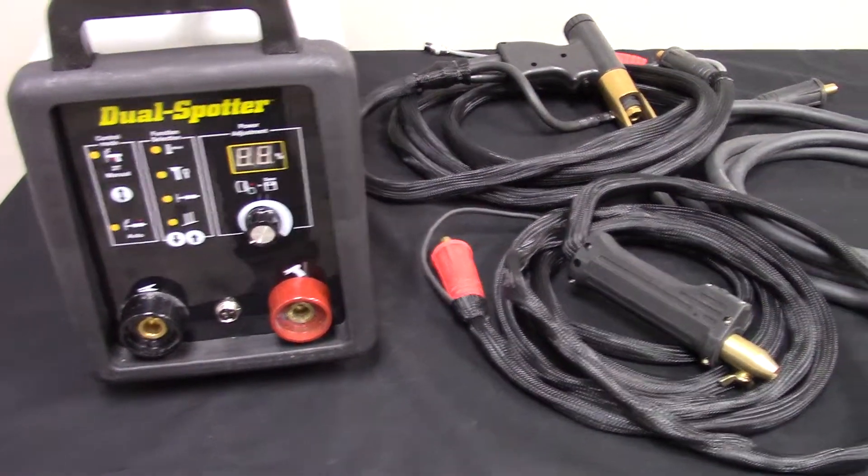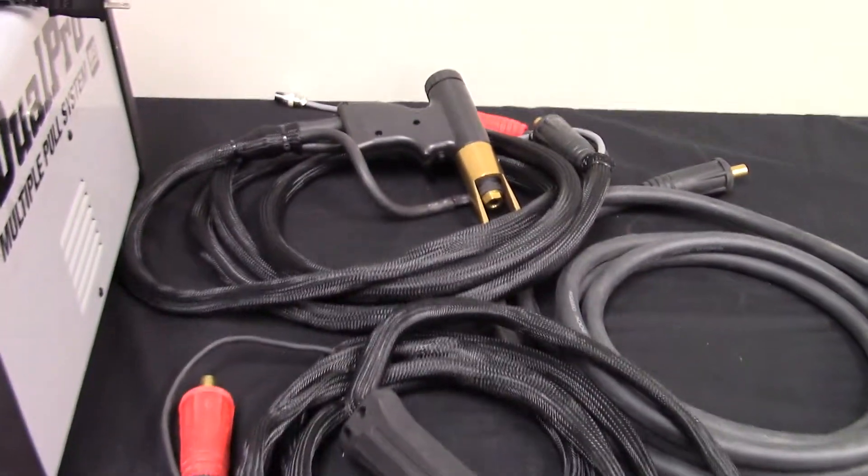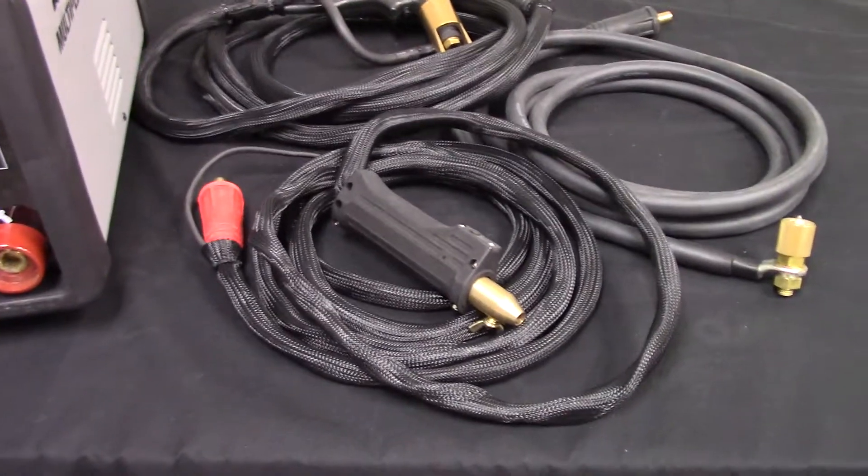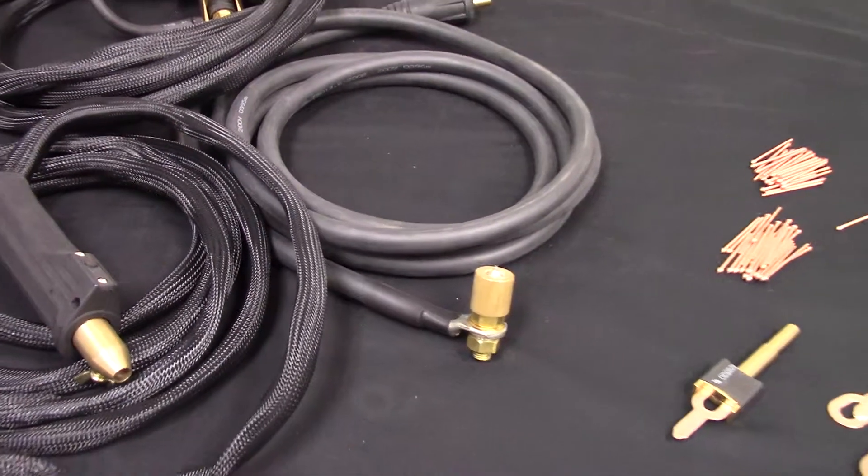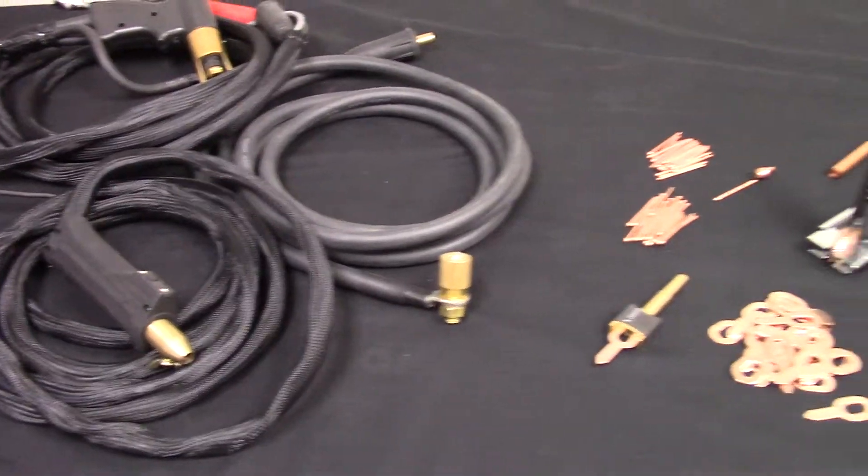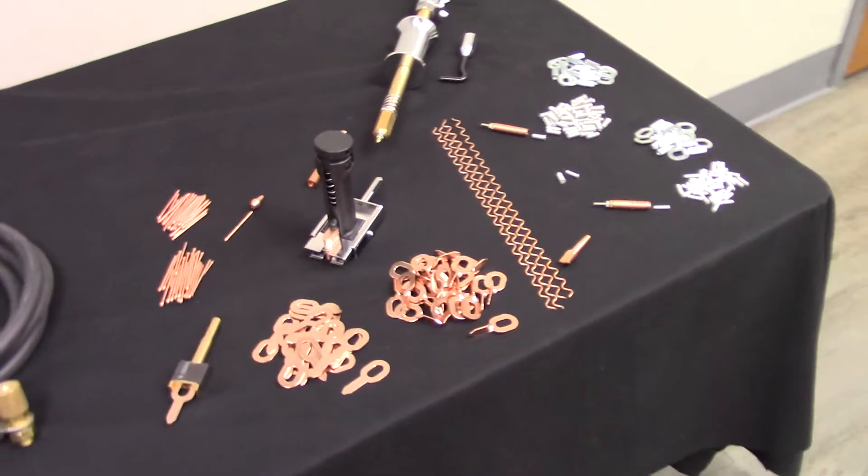This system features both aluminum and steel torches and includes a steel weld-on ground ring. Additionally, this system includes a series of accessories and consumables for any pulling application.